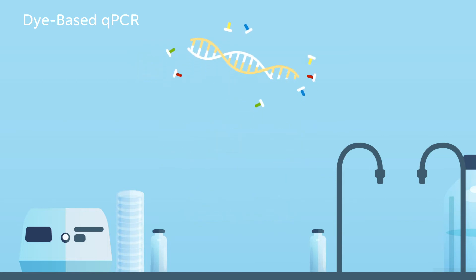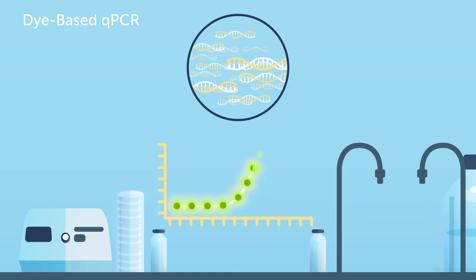A double-stranded DNA binding dye is included in the QPCR mix, and the fluorescent signal is measured after each amplification cycle. Because fluorescent signals of these dyes increase dramatically in the presence of double-stranded DNA, QPCR amplification can be detected and visualized as an increase in fluorescent signal.